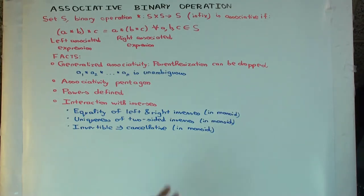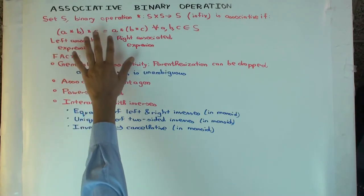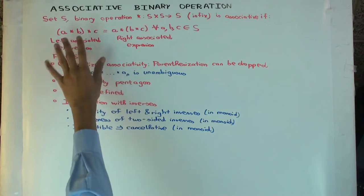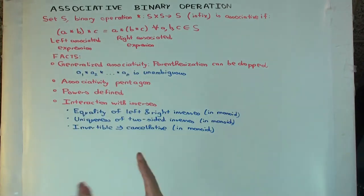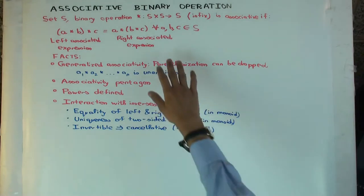Now associativity says that for all A, B, C, in S, (A star B) star C equals A star (B star C). This left thing is called the left associated expression because the associating is happening on the left. The right thing is called the right associated expression, though some people interchange the terms. It doesn't really matter.